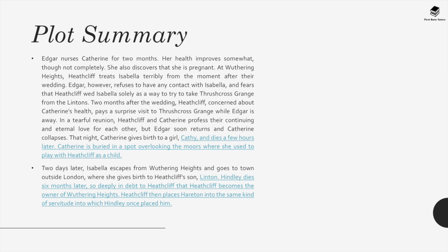Edgar nurses Catherine for two months; her health improves somewhat, though not completely. She also discovers she is pregnant. At Wuthering Heights, Heathcliff treats Isabella terribly from the moment after their wedding. Edgar refuses contact with Isabella, fearing Heathcliff wed her solely to seize Thrushcross Grange. Two months after the wedding, Heathcliff pays a surprise visit to Thrushcross Grange while Edgar is away. In a tearful reunion, they profess their eternal love, but Edgar soon returns and Catherine collapses. That night, Catherine gives birth to a girl, Cathy, and dies a few hours later.